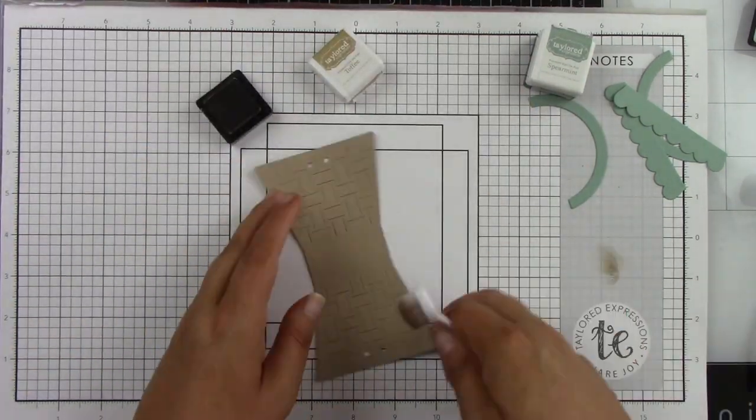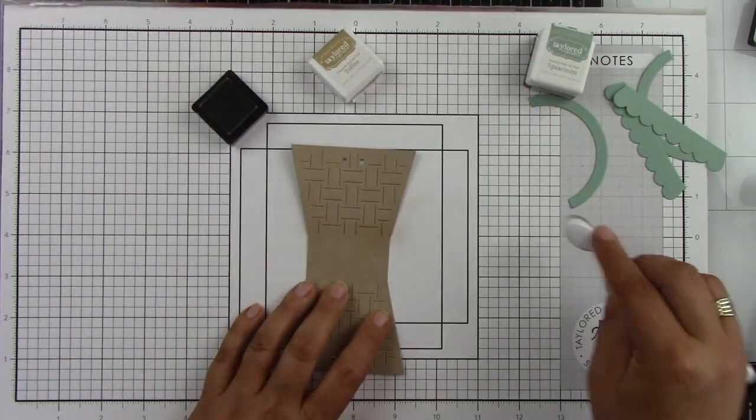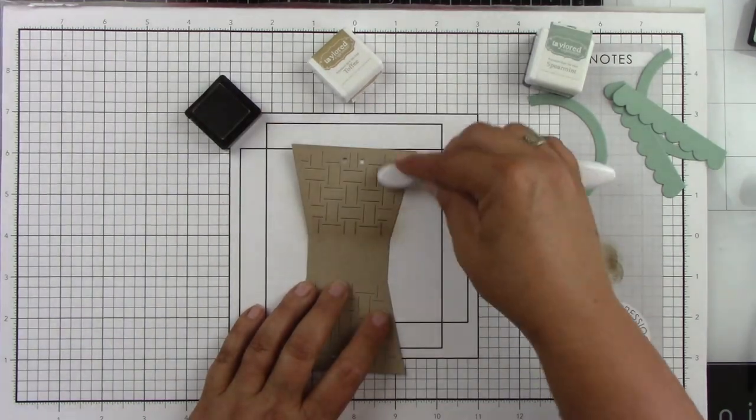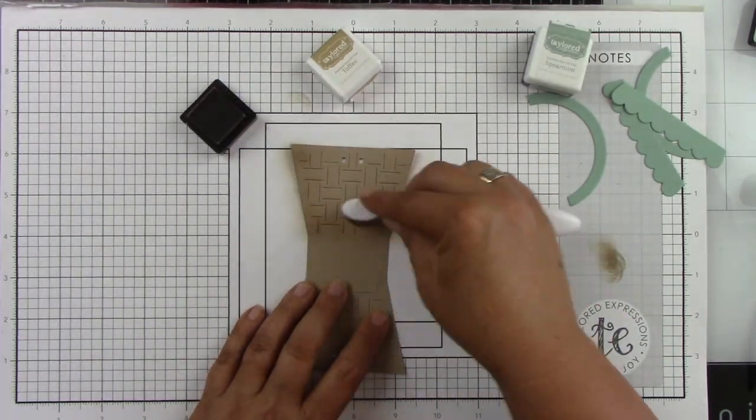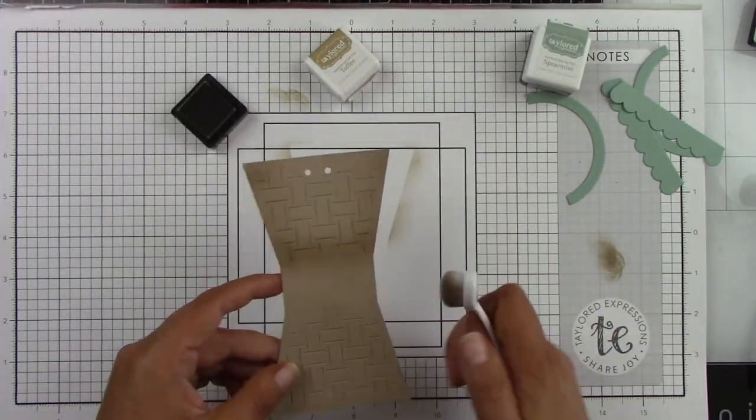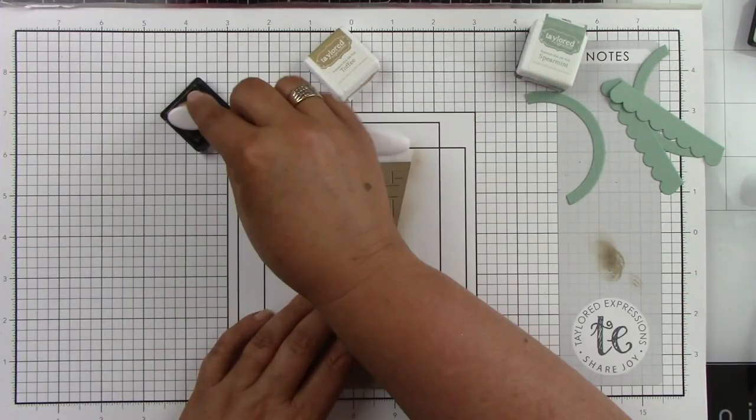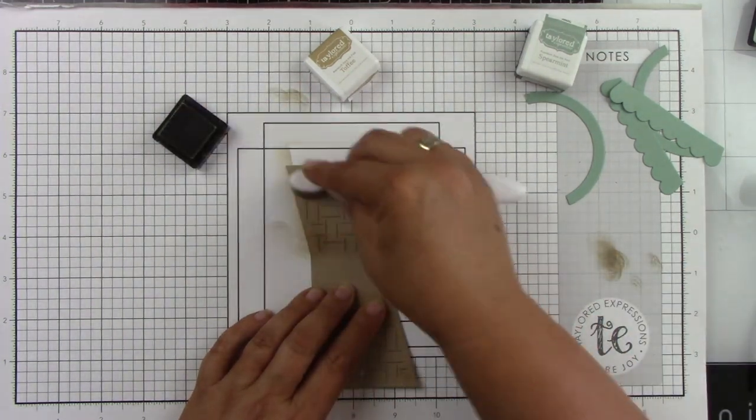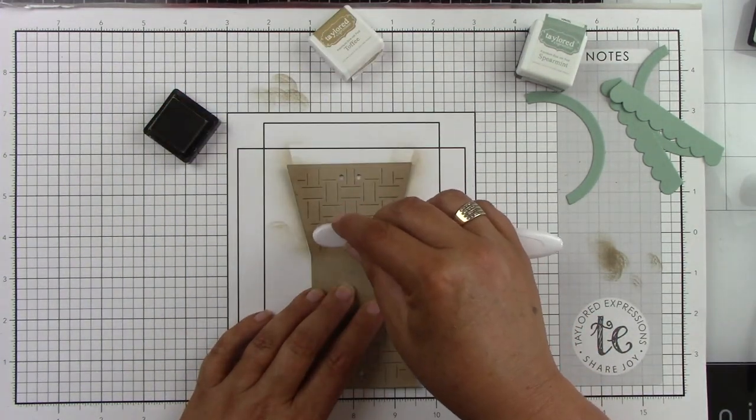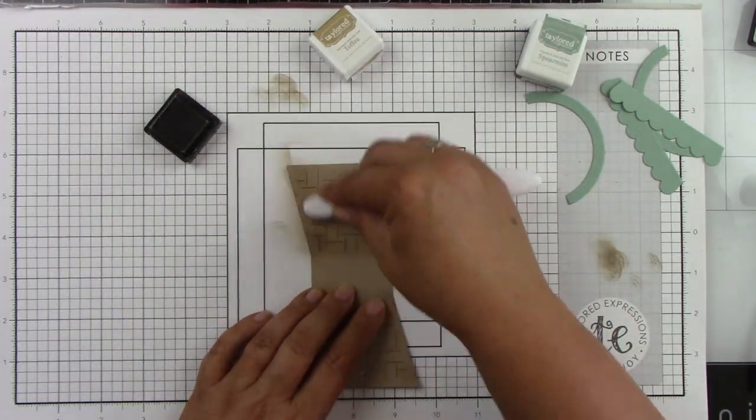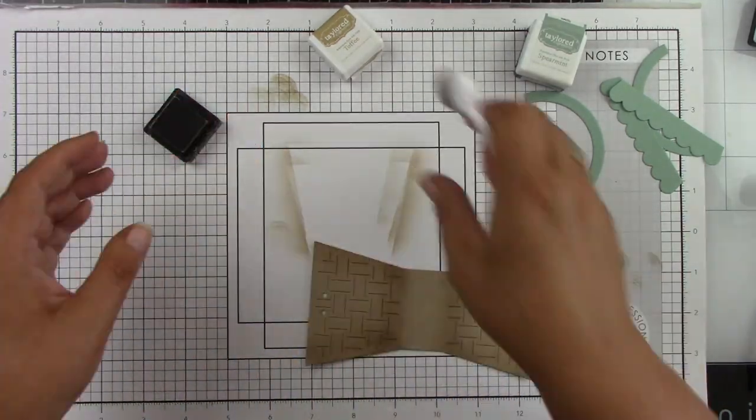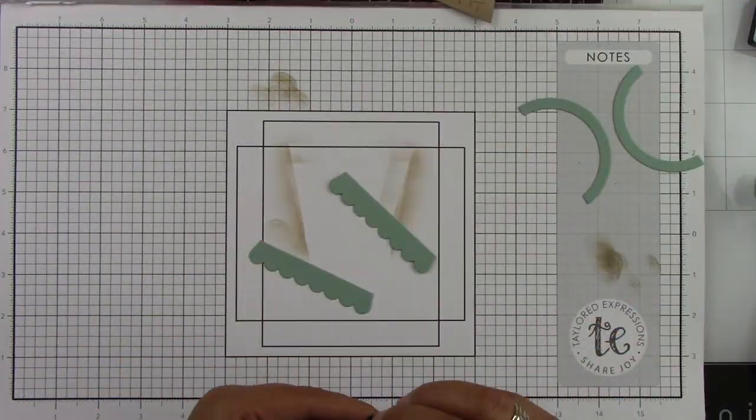I decided I'm going to kind of do tone on tone, just adding a little bit of shading. So I'm taking the toffee ink to the toffee cardstock and just adding a little bit of shadow around the edges. Now, it is going to not be this dark because once the ink dries, it'll be a little bit softer, but it still adds a little bit of something. So I'm using the Biddy Blender Brushes, just so I'm not covering the whole cardstock.